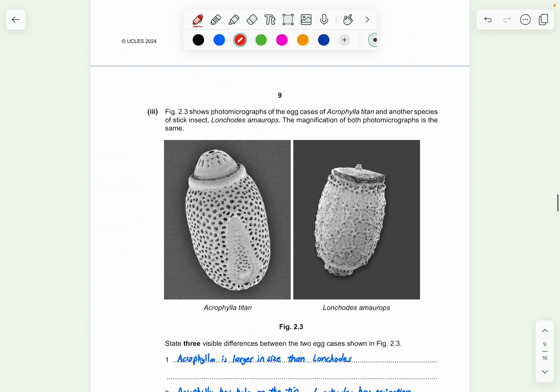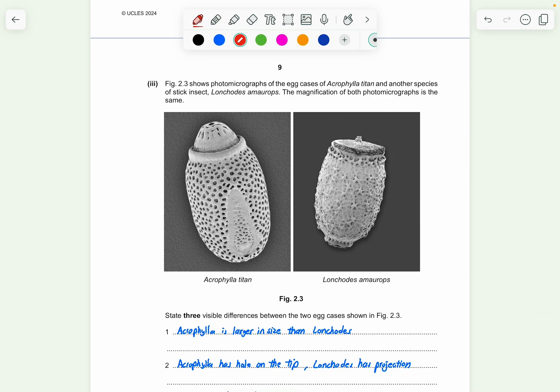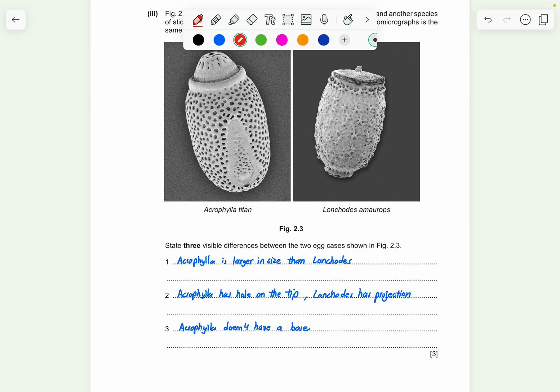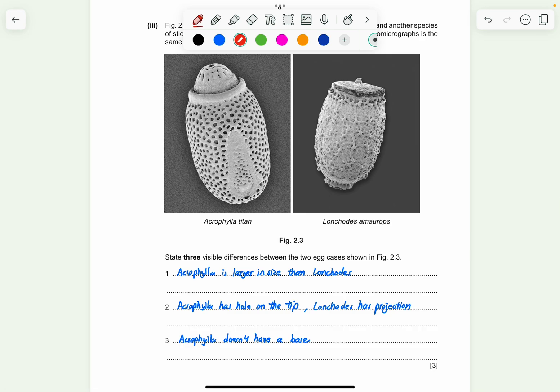Part three, figure 2.3 shows the photomicrograph of the egg cases of Acrophila titan and another species of stick insect, Longcordis amalrops. The magnification of both photomicrograph is the same. So state three visible differences between the two egg cases shown in figure 2.3. So you can mention that Acrophila is larger in size than Longcordis. And Acrophila has a hole on the top, you can see here. And Longcordis has a projection. This is the projection. Acrophila doesn't have a base. It has a curved base, while for Longcordis, it has a proper base actually.